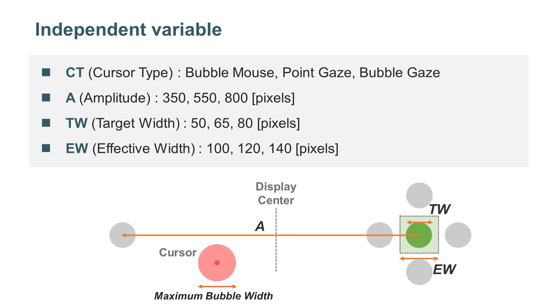Target width (TW) values are 50, 65, and 80 pixels; effective width (EW) values are 100, 120, and 140 pixels. One pixel is 0.33 mm.